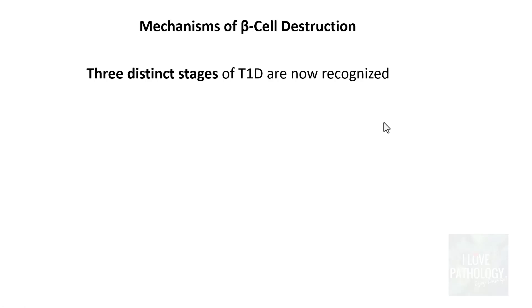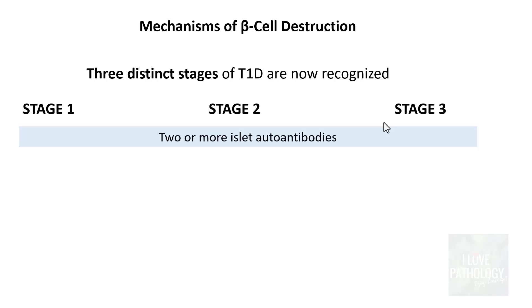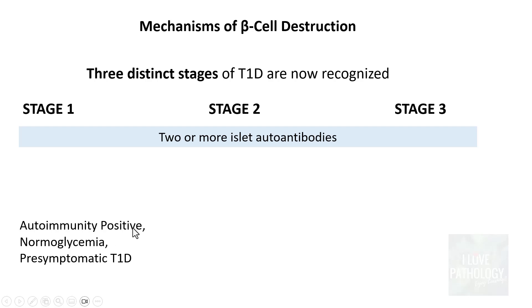Once we understand the mechanism of beta cell destruction, we need to know the three distinct stages of type 1 diabetes mellitus: stage 1, stage 2, and stage 3. In all these stages, remember, there are autoantibodies, since this is an autoimmune disease. In stage 1, autoimmunity is positive because there are autoantibodies, but sugar levels are normal — that is, normal glycemia — and patients are not symptomatic. This is pre-symptomatic type 1 diabetes mellitus; the only evident finding is the presence of islet autoantibodies.